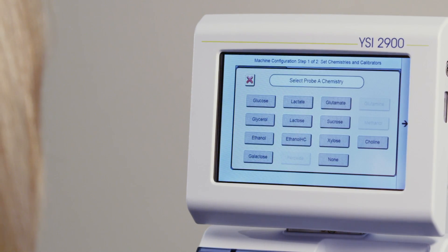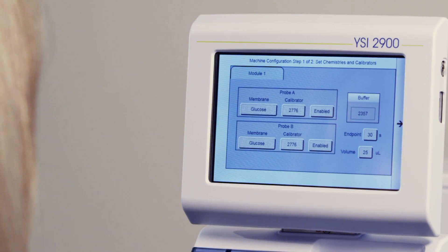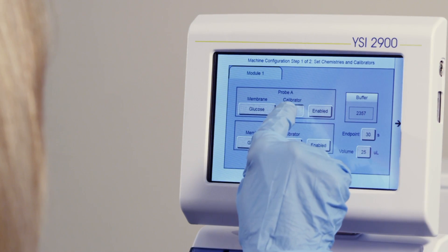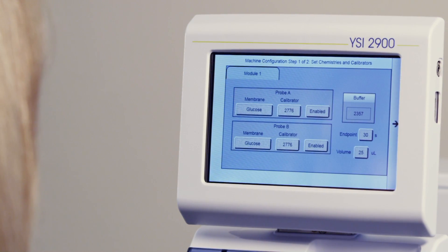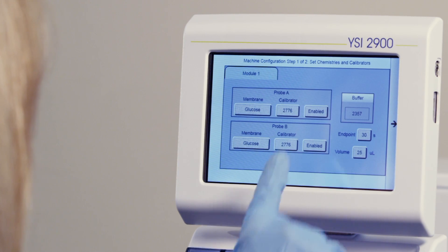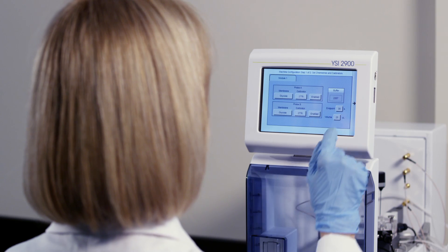Under Probe A, press the button under Membrane. Press what you're going to measure. We're measuring glucose. Press the button under the word Calibrator, and select the product number for the calibrator you are using. Make sure that the probe is enabled. Leave the endpoint and volume as shown.